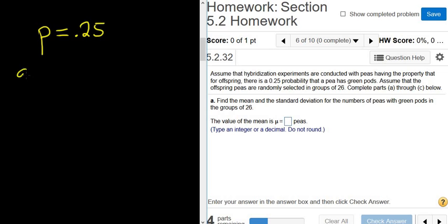Part A, find the mean and standard deviation for the number of peas with green pods in the groups of 26. So n is 26. So recall the formula for the mean or expected value of the binomial is np. So this is 26 times 0.25.